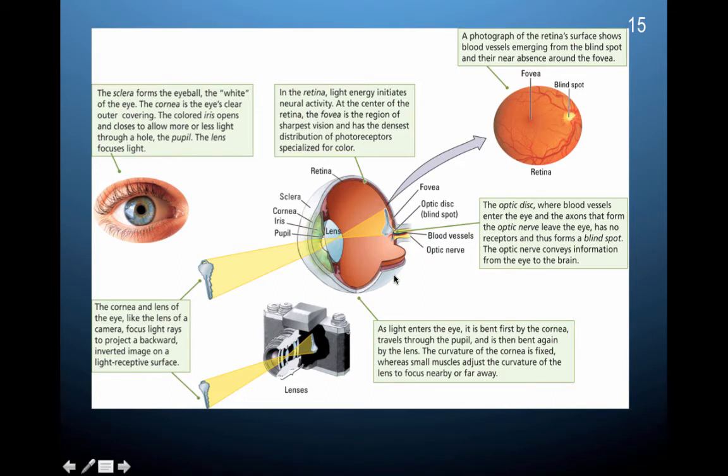So in the retina, light energy initiates neural activity. So the photoreceptor cells are in the retina. So the retina is where the visual energy from the, or the light wave energy from the environment is converted into neural energy for your brain to interpret.